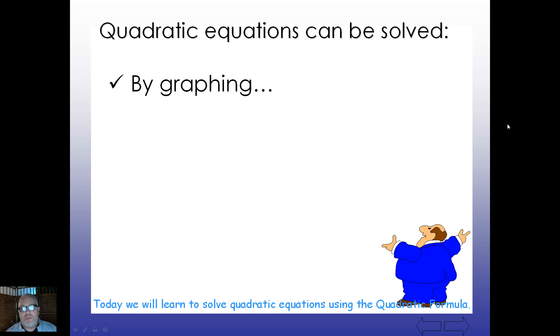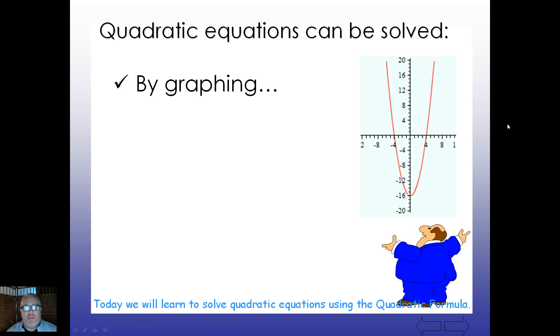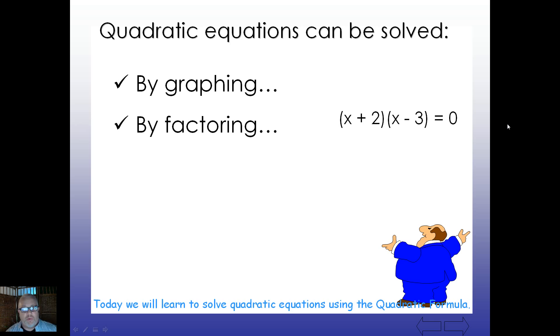And quadratic equations can be solved several different ways. We've already learned how to solve them by graphing. Remember that in this particular image here, this has two zeros, or two x-intercepts. It passes through at negative four and positive four.